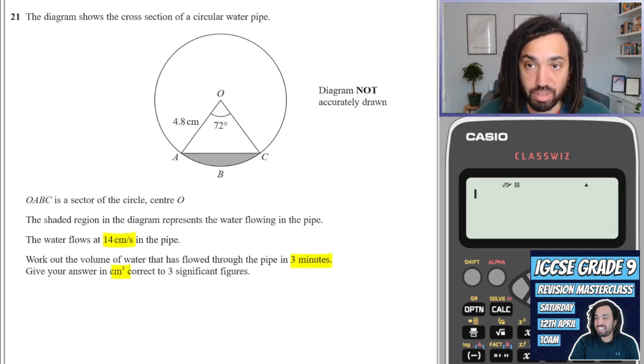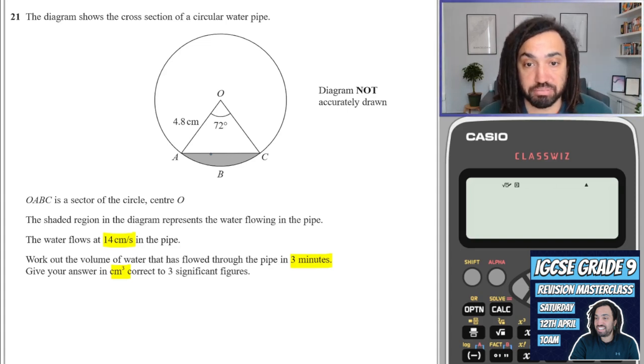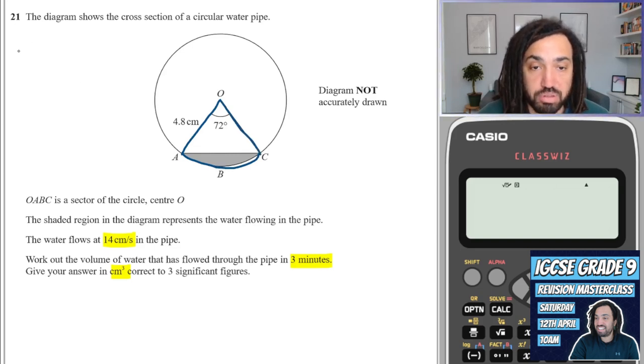Okay, so instantly when I see a diagram like this and I've got a shaded area, I'd want to find what the shaded area is. So let's give that a go then. So in order to find what is called a segment, first we need to find the sector of the circle. Okay, so I will do that up here.